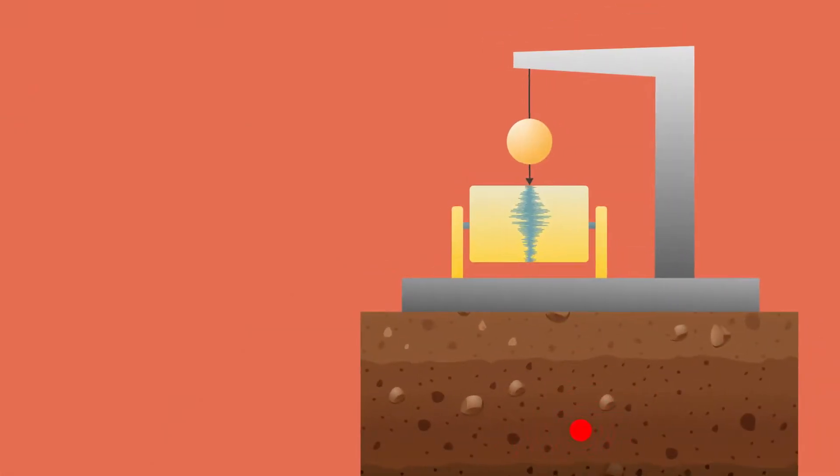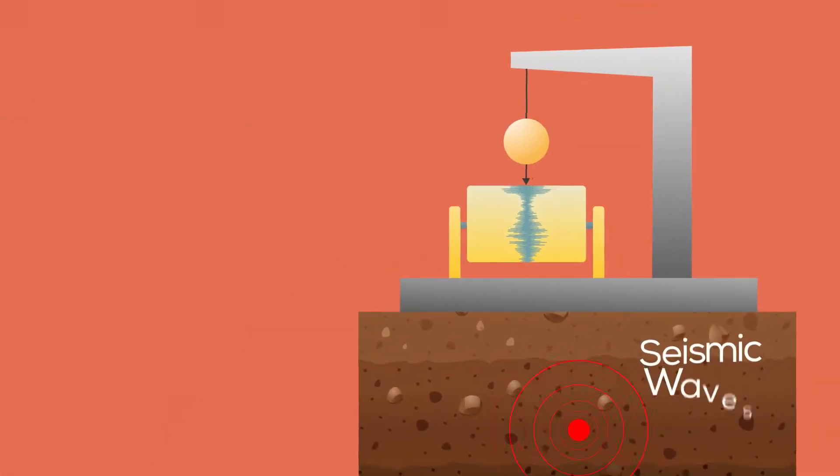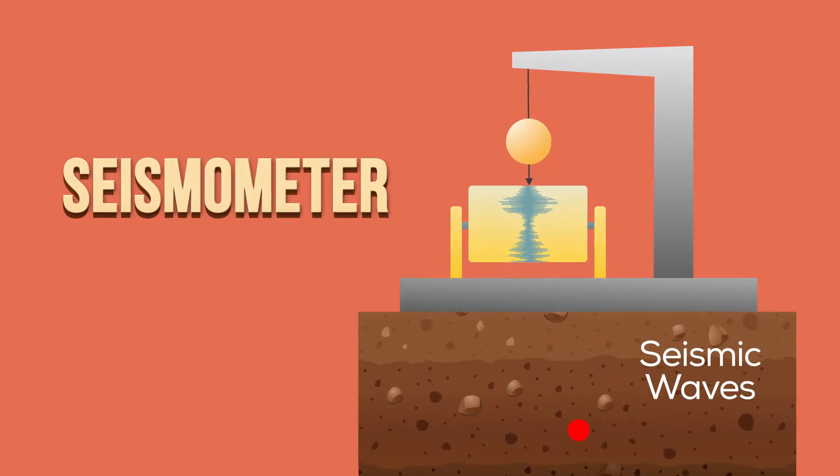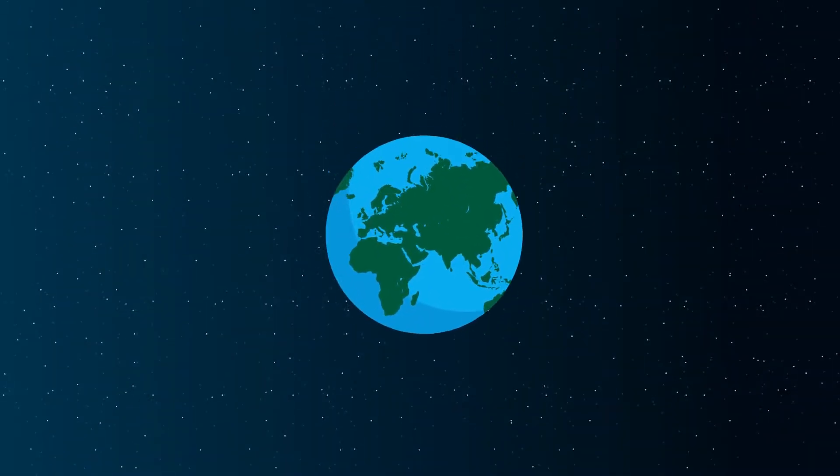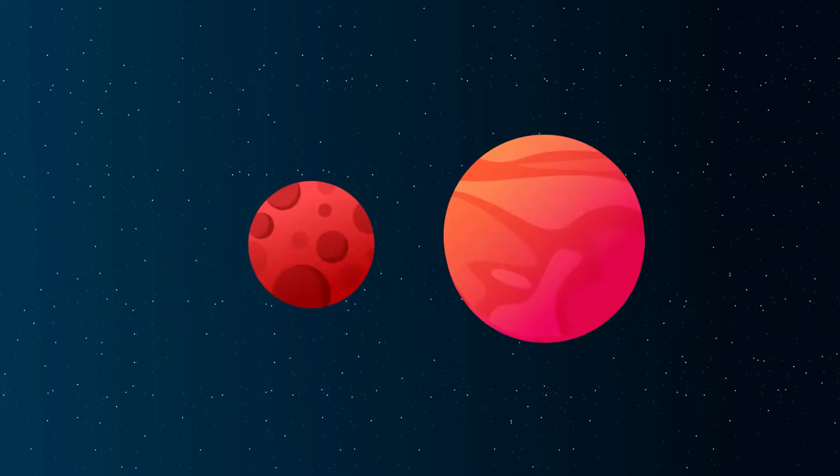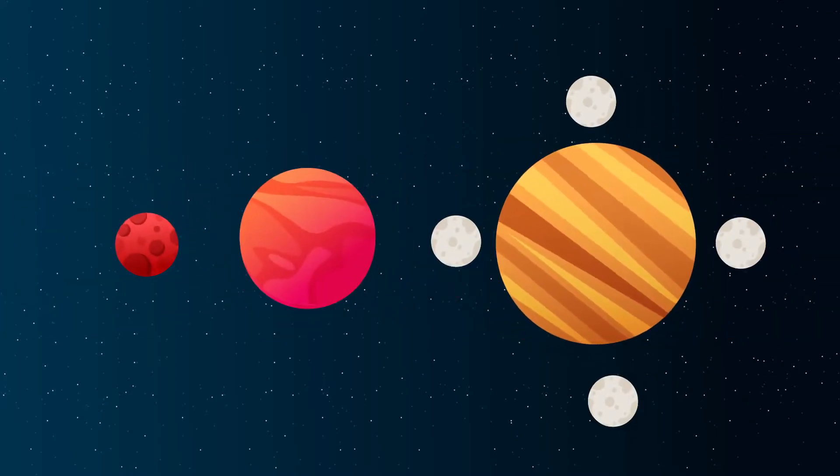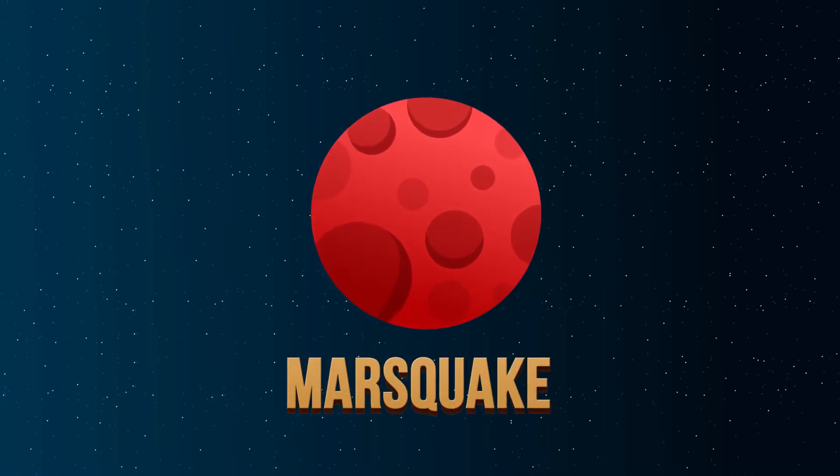There is a device which is used to measure these seismic waves called a seismometer. Apart from Earth, quakes also happen on Mars, Venus, and several moons of Jupiter too. Earthquakes on Mars are called Marsquakes.